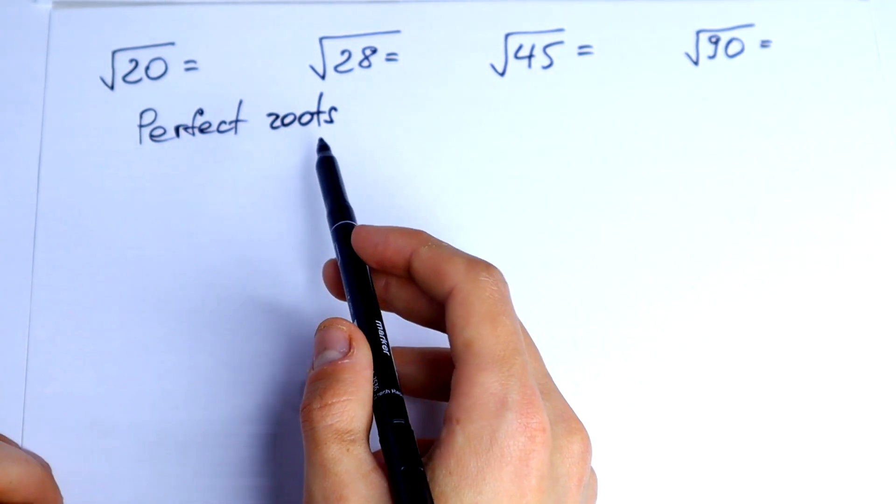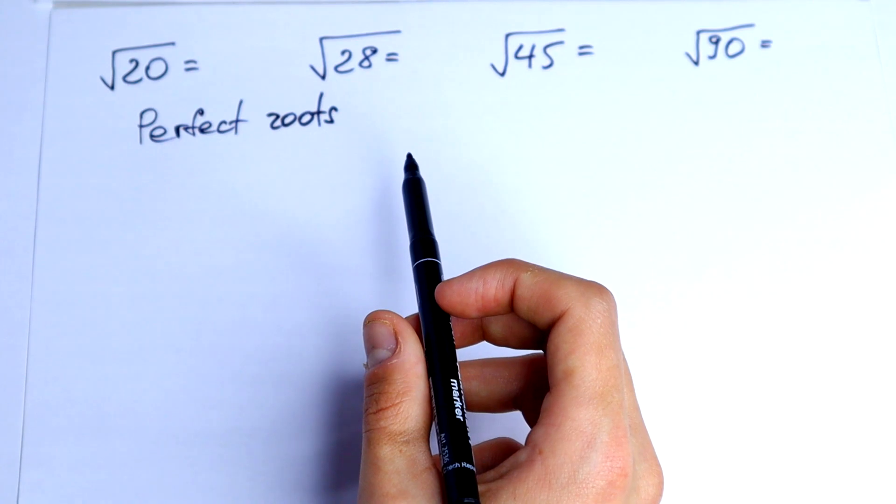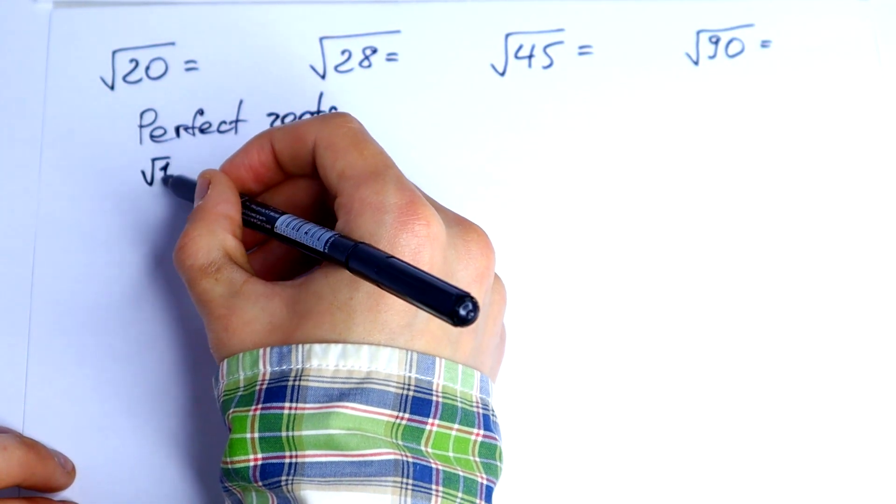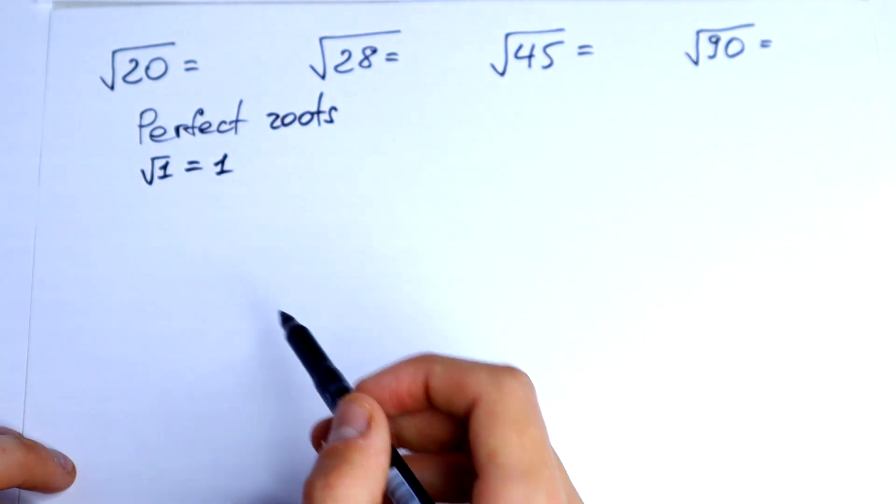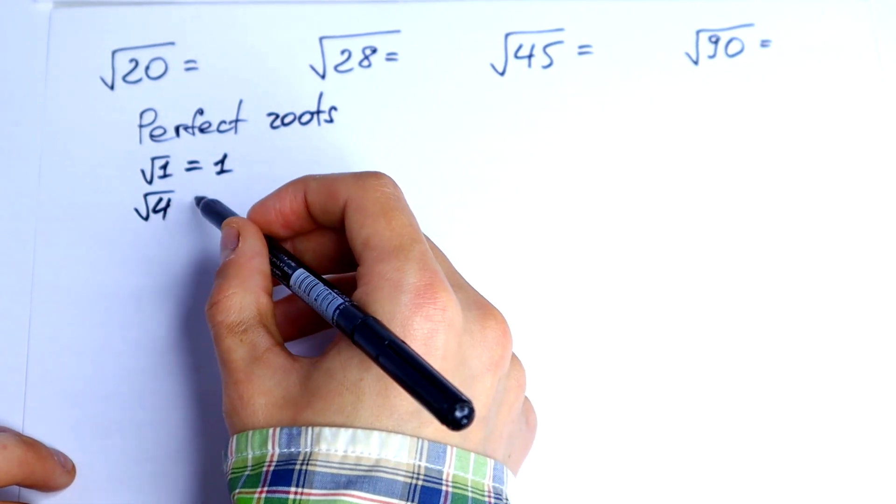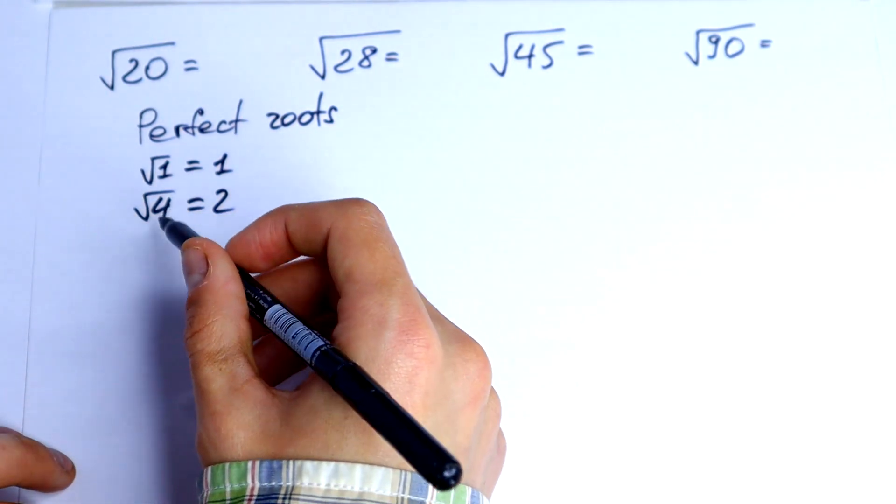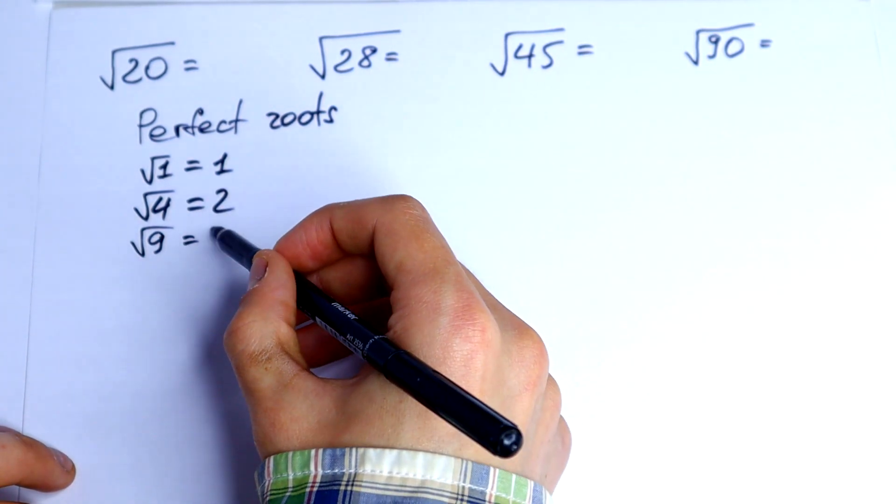This is the roots which can be calculated easily or you can see it in the table. For example, square root of 1 equals 1. The next one is square root of 4 equals 2. The next one, square root of 9 equals 3. The next one, square root of 16 equals 4.